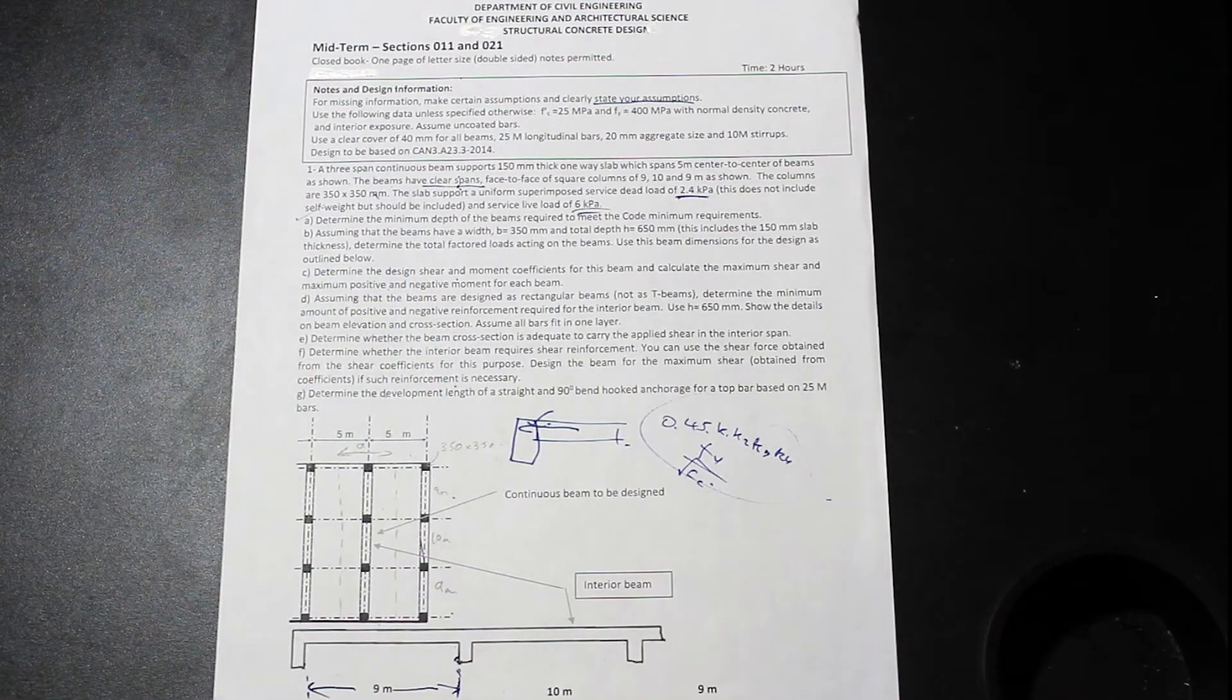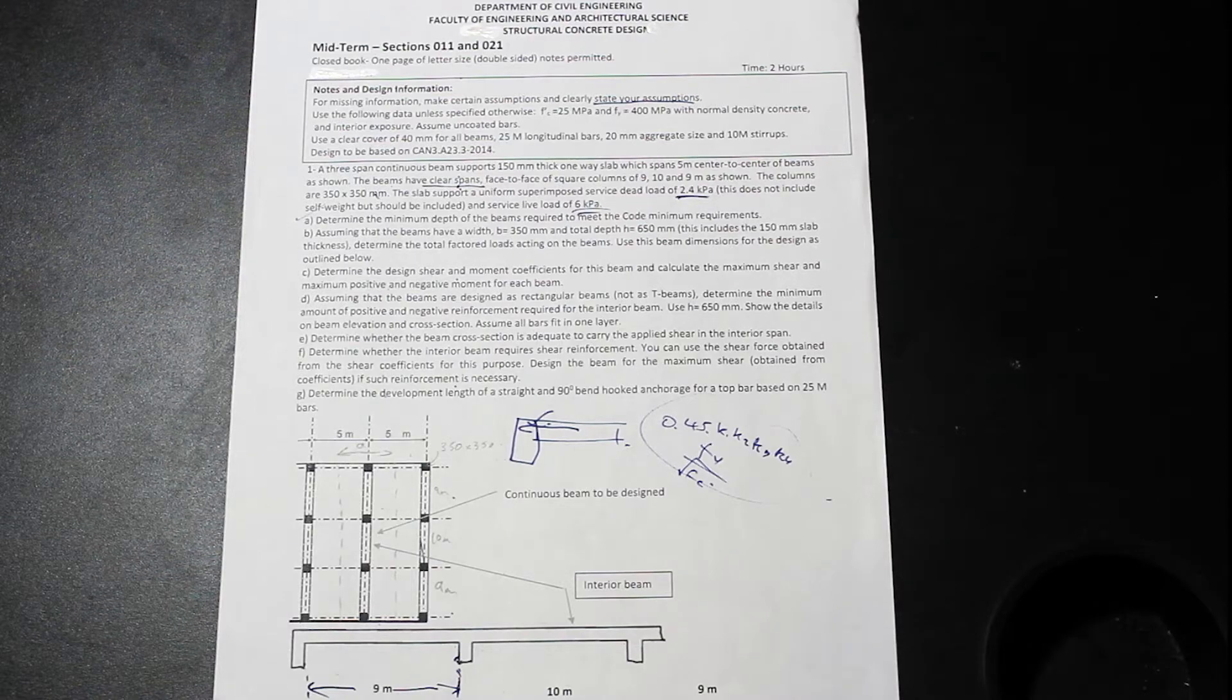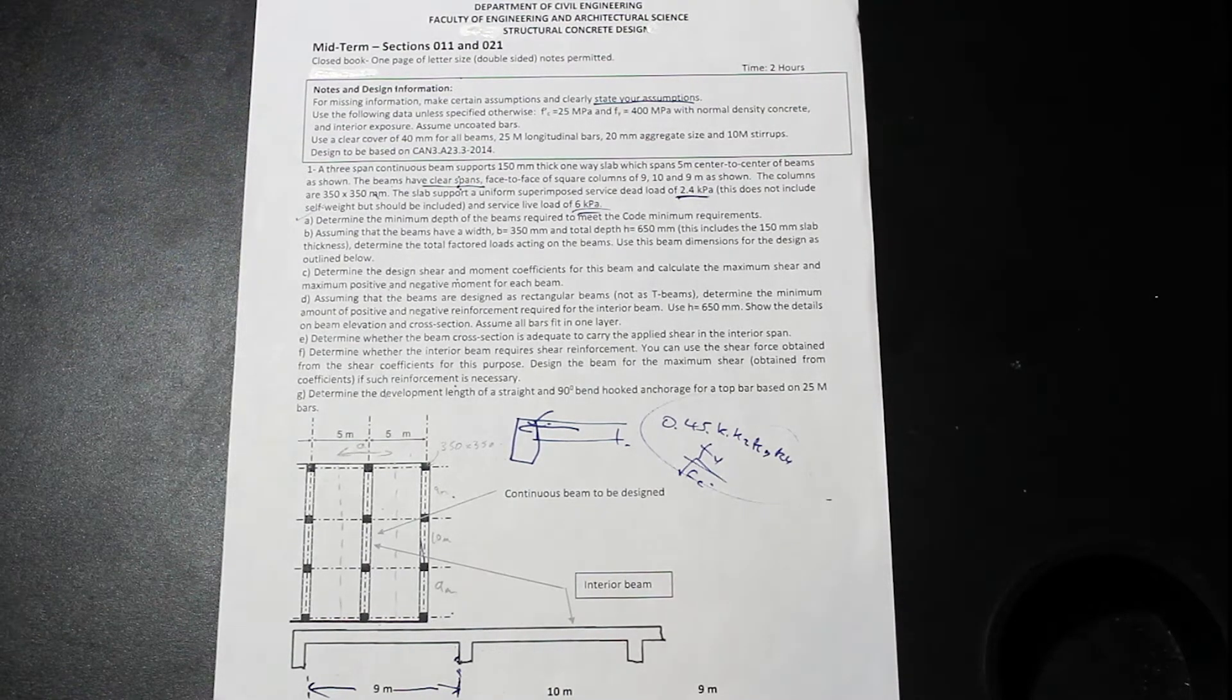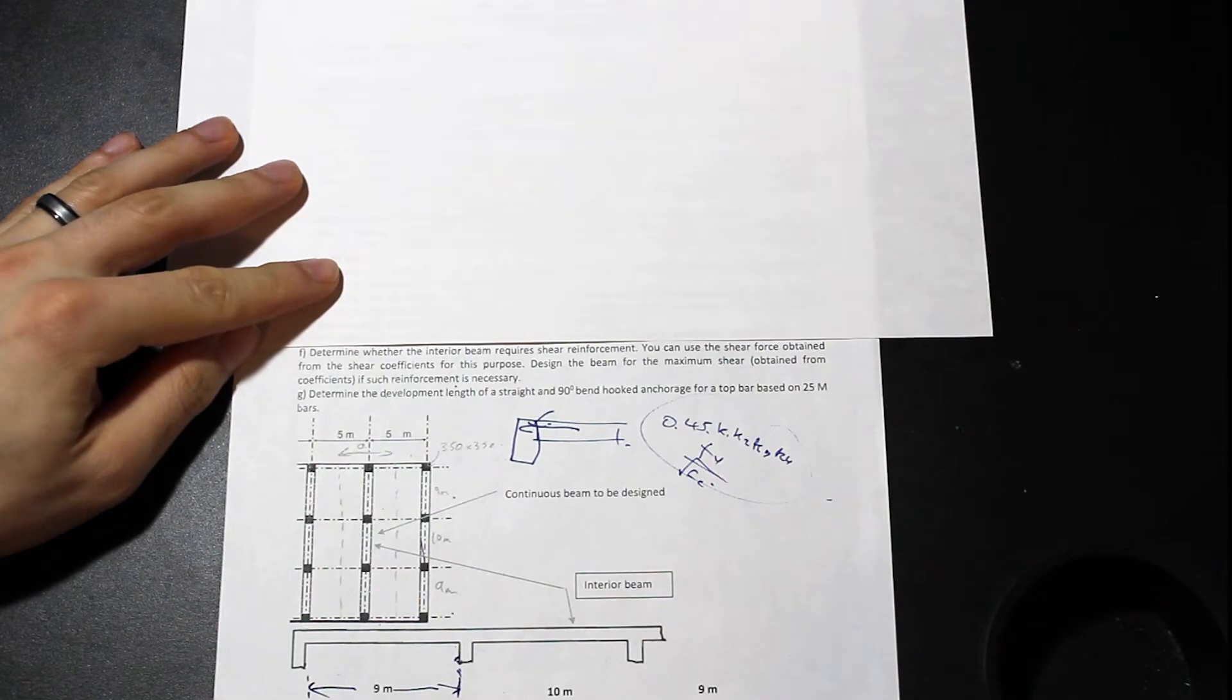So those are kind of coefficients that you needed to have in your cheat sheet. If you didn't know that that was coming, and this is another reason why this test is hard, is because a lot of people didn't know that this was the case. And as a result of this, they kind of didn't know what the minimum depth of the beam was.